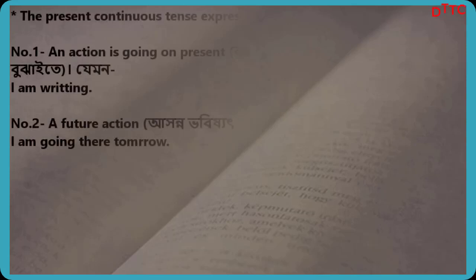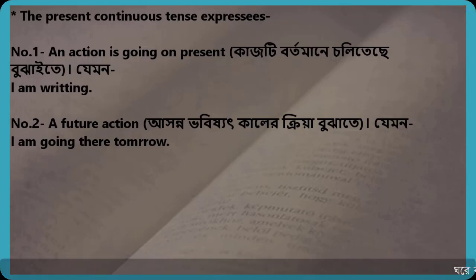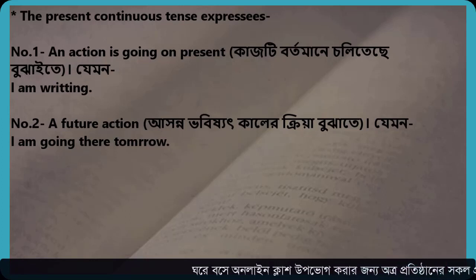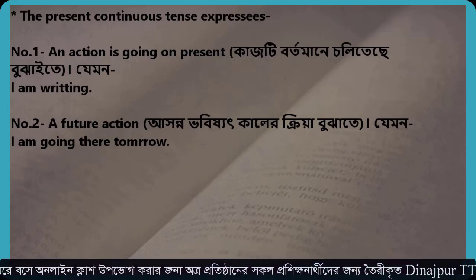The present continuous tense expresses: Number 1 — an action going on at present. For example: I am writing. Number 2 — a future action. For example: I am going there tomorrow.